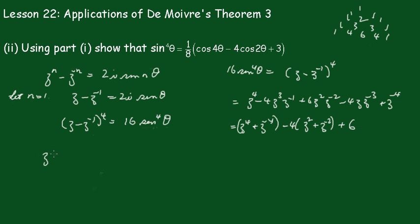Now recall that Z^n plus Z^(-n) is equal to 2 cos nθ, so this becomes 2 cos 4θ minus 4 times 2 cos 2θ plus 6.